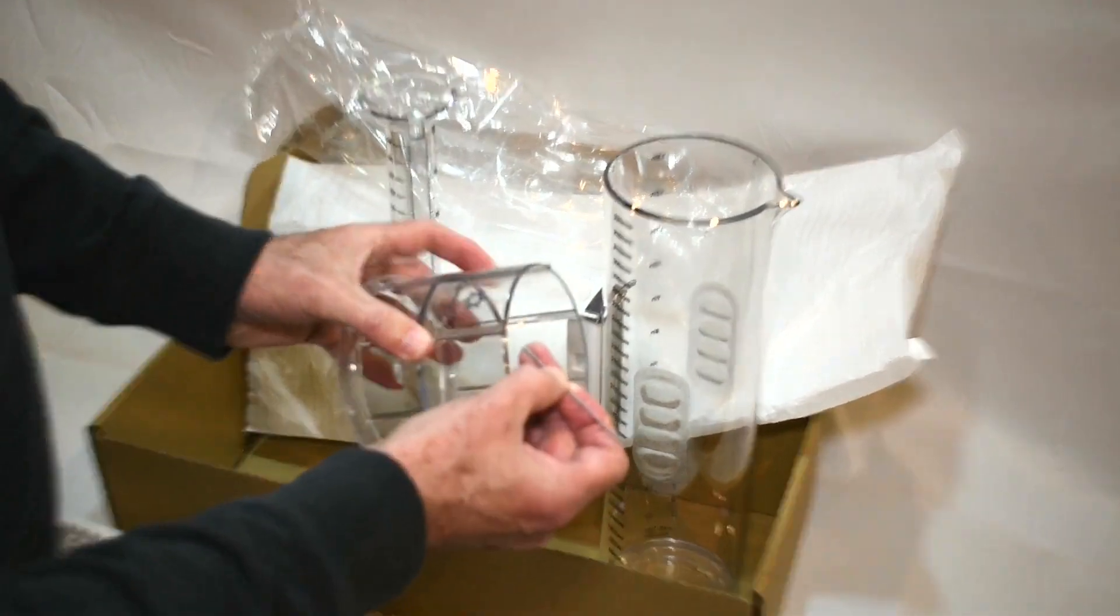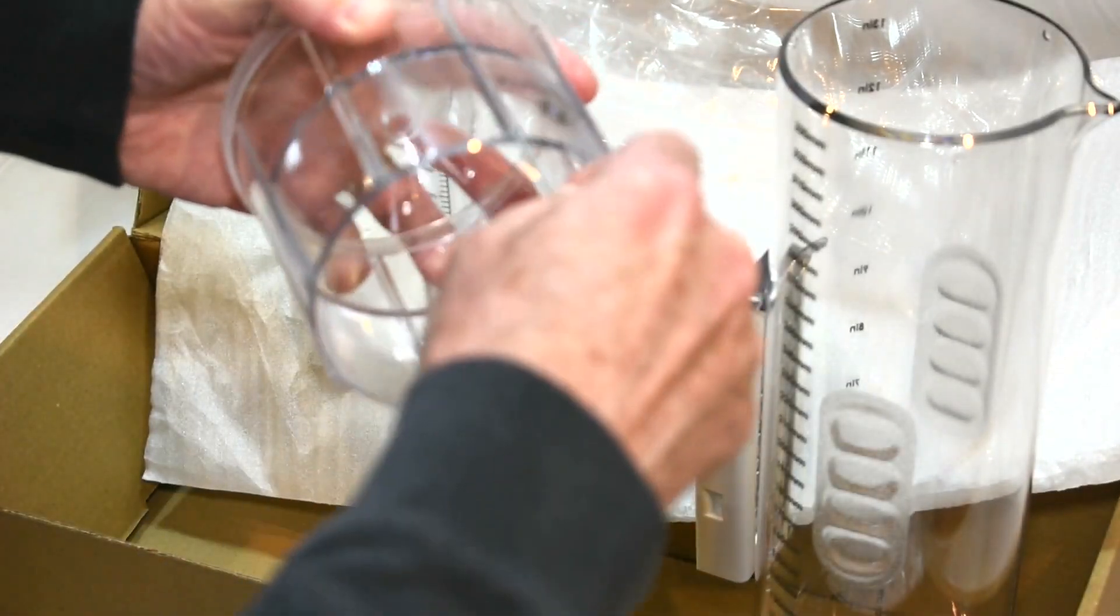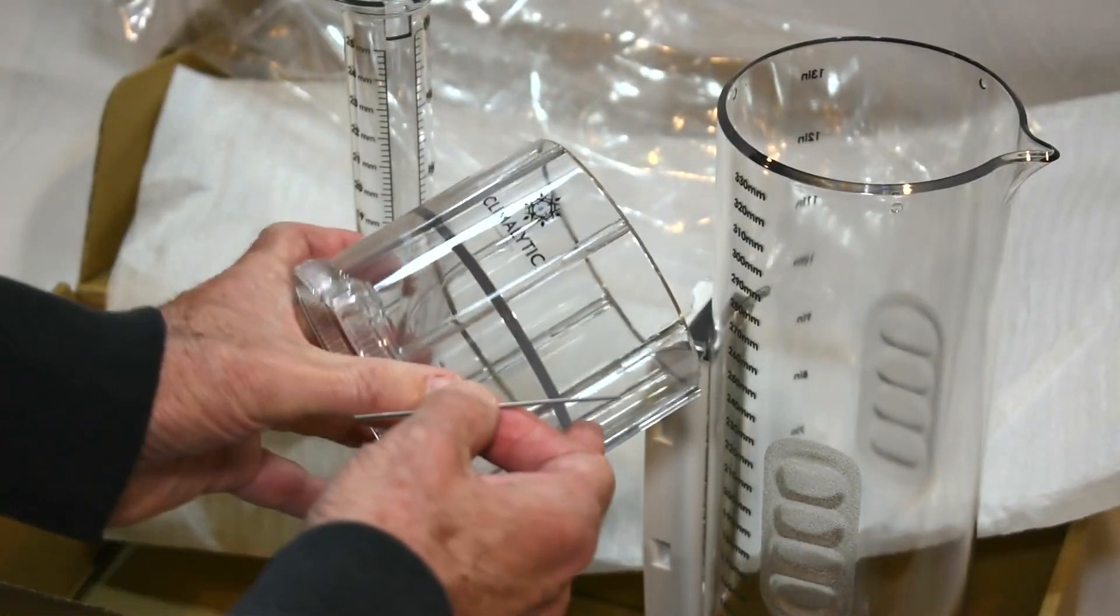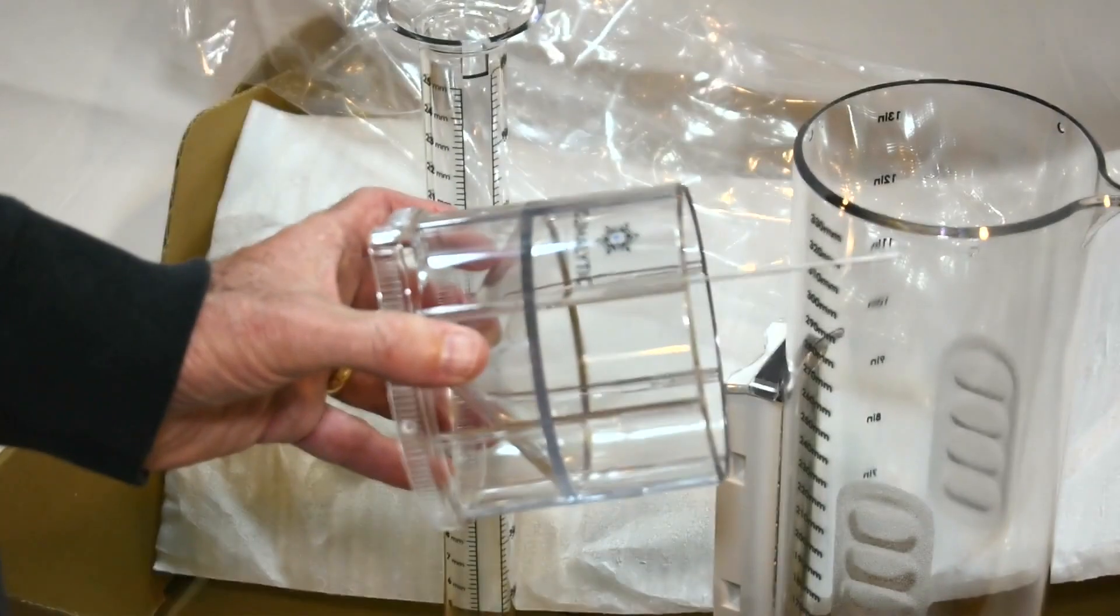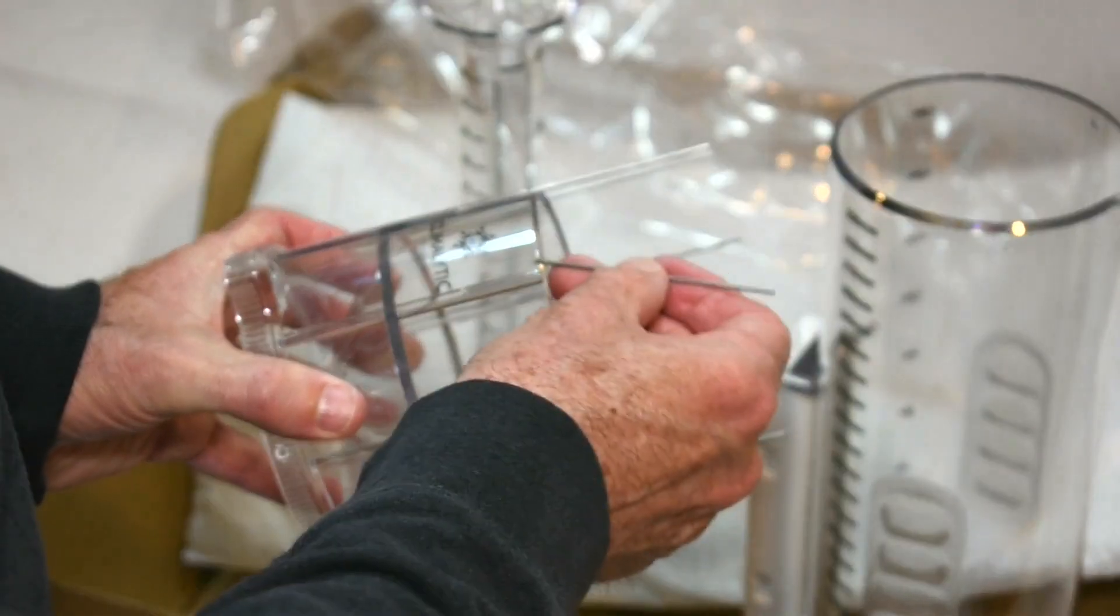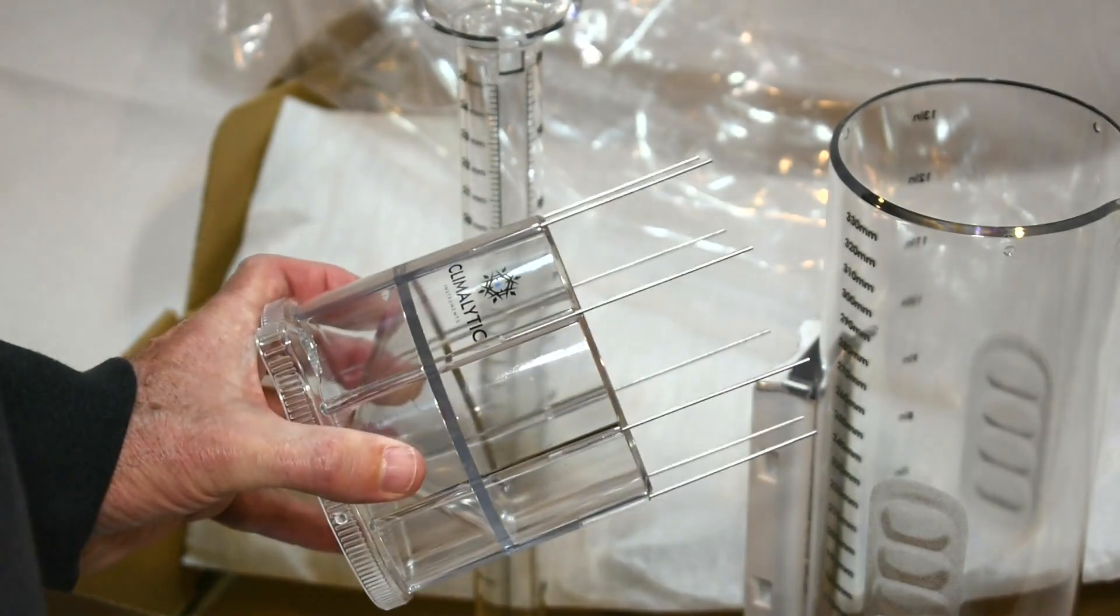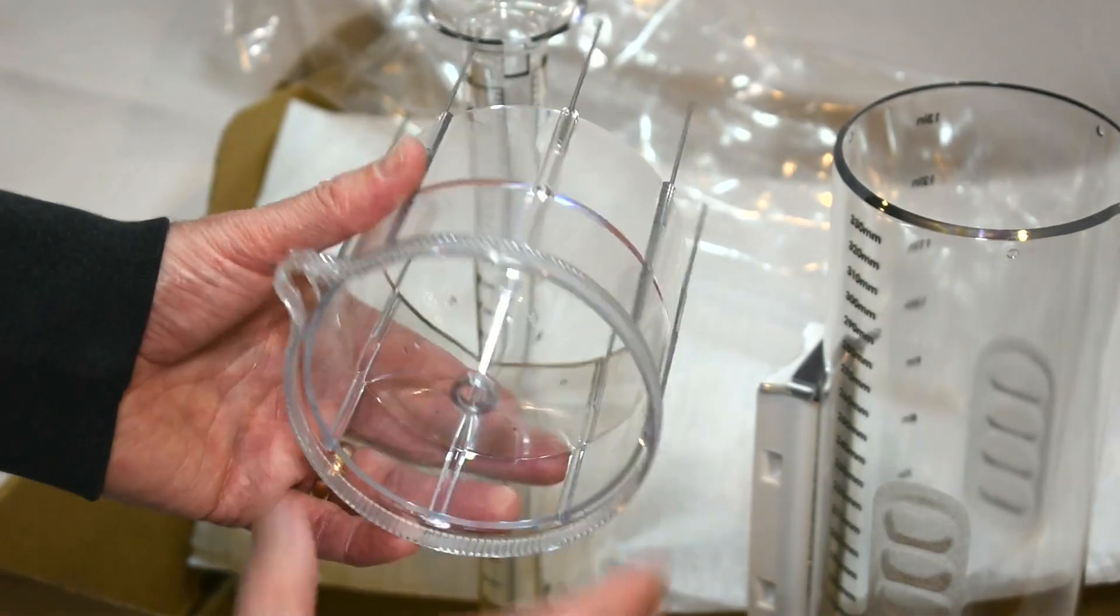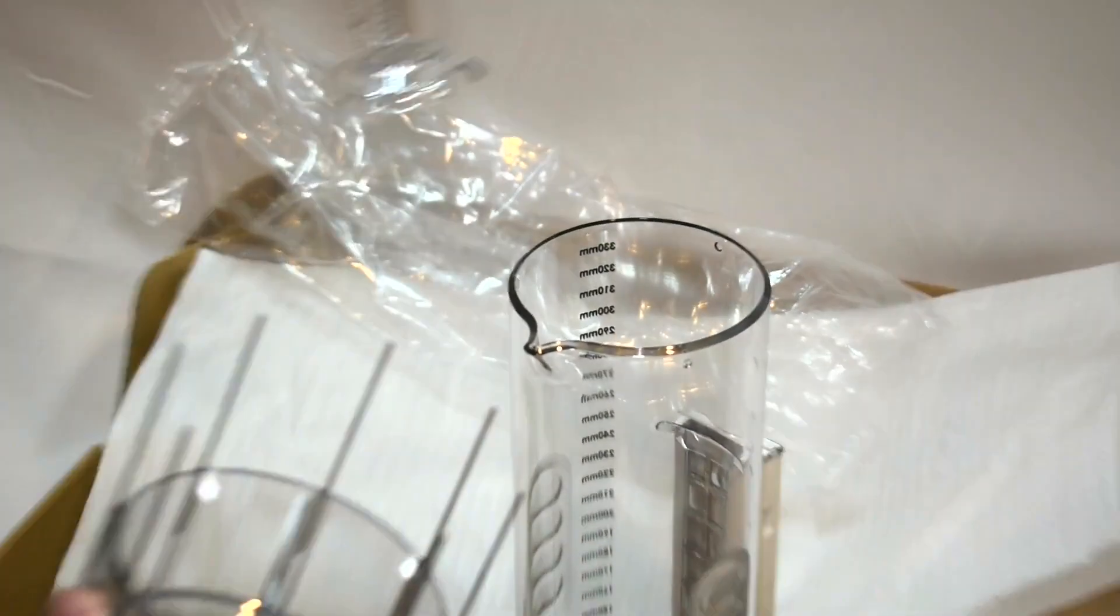The cap funnel as we noted before can accommodate eight bird deterrent rods. Very easy to put these in. They'll just slide in and stay in by friction. Each one of these can be removed easily if you do not want to use them. They're strictly optional but they are a stainless steel rod that will deter birds from nesting and sitting on your gauge. The bird spikes once they're on do make it difficult to use this as a funnel for pouring the contents of the outer tube into the inner tube, and that's why we've designed the inner tube with its own funnel on the top so that it's easy to decant without use of the top funnel.